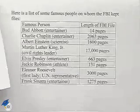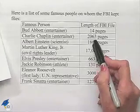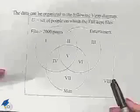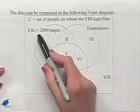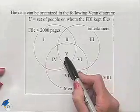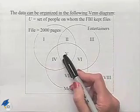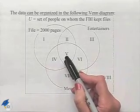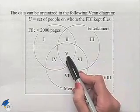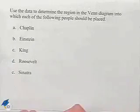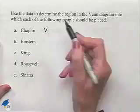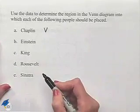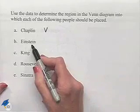His file was 2,063 pages long. For that reason, he's an entertainer who was a man who had a file greater than 2,000 pages, meaning that element would be in region five. So the region in which he would be placed is region five.